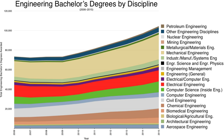Some professors and educators believe that engineering programs should change to focus more on professional engineering practice, and courses should be taught more by professional practitioners rather than researchers. By the end of the first year, an engineering student should decide what specialization they would like to study. Specializations could include civil, mechanical, electrical, chemical, biological, industrial, aerospace, materials, metallurgical, agricultural, and many other fields. After choosing a specialization, the student will take classes that build on their foundational education and focus toward their chosen field.